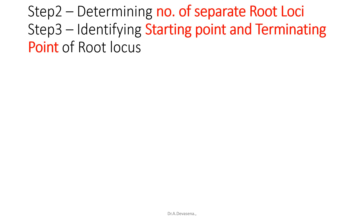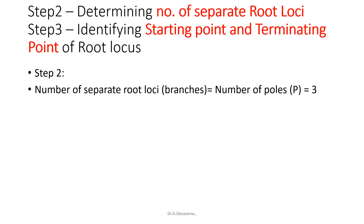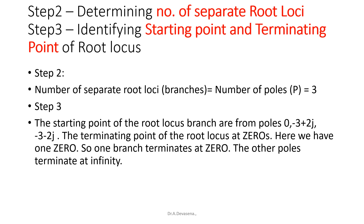Now we are going to determine the number of separate root loci as well as identify the starting point and terminating point of the root locus. We have three poles and one zero. Since the number of poles is greater than the number of zeros, the number of separate root loci branches equals P = 3. The starting points are the poles: 0, -3+2j, and -3-2j. One branch terminates at the zero, and the other two terminate at infinity.